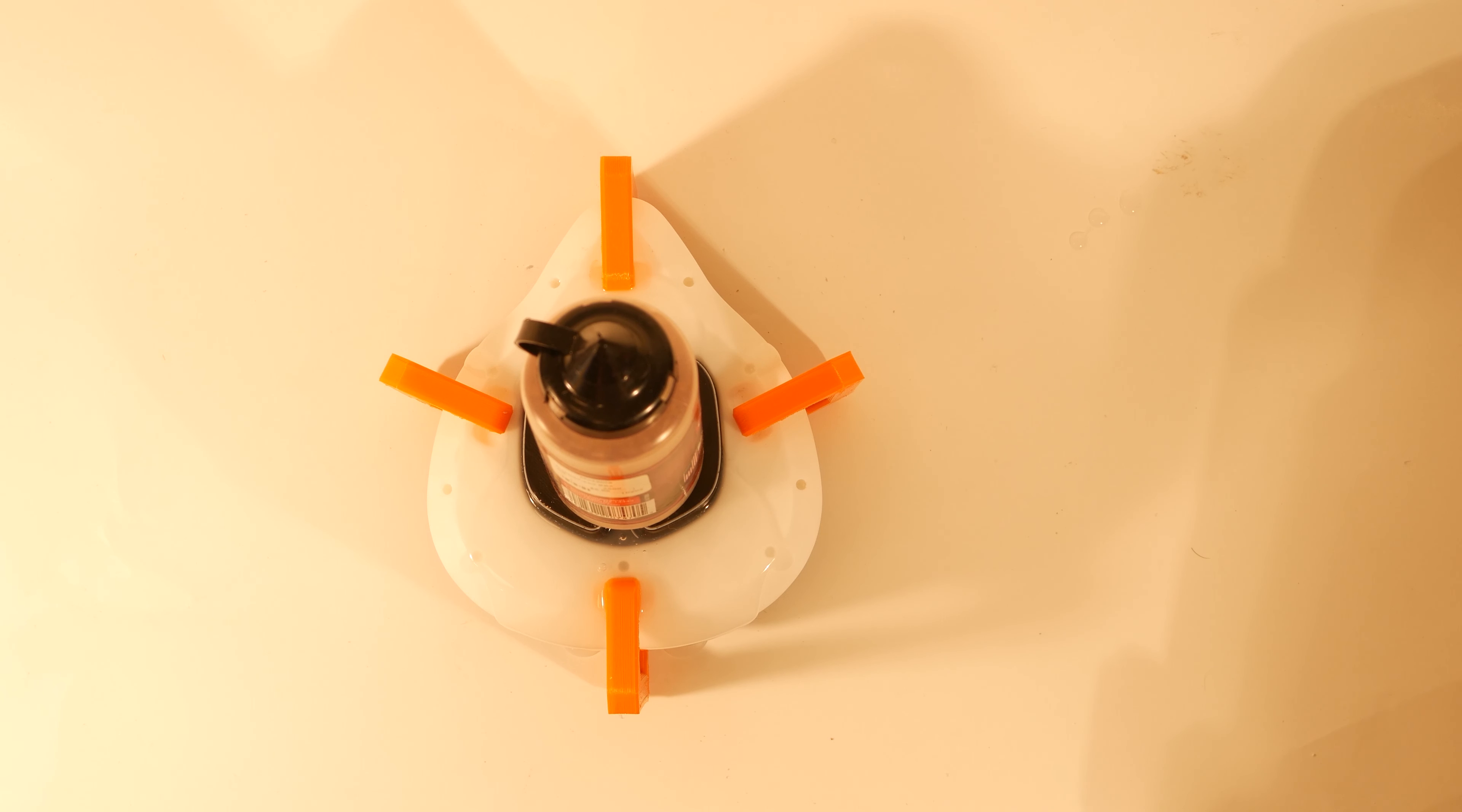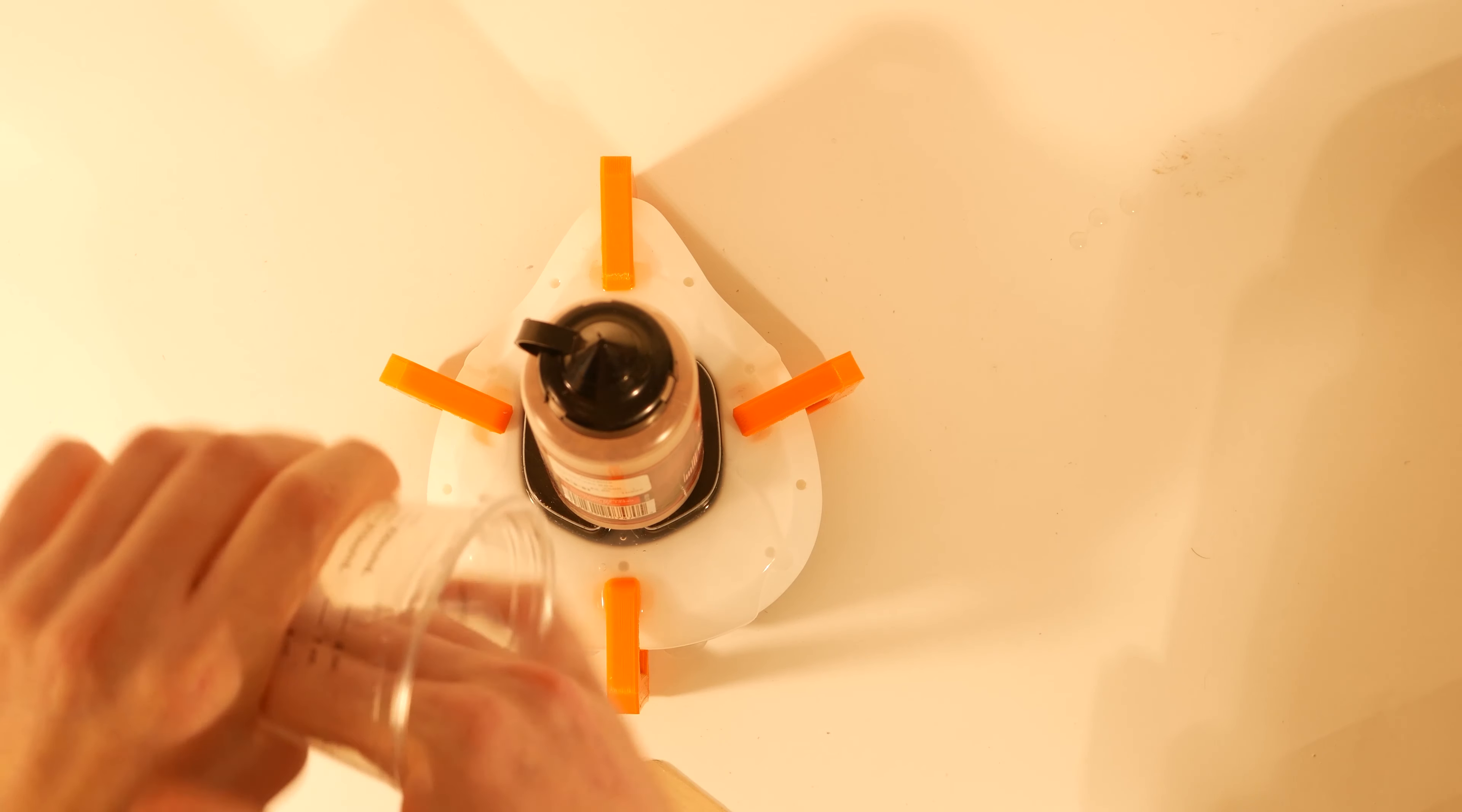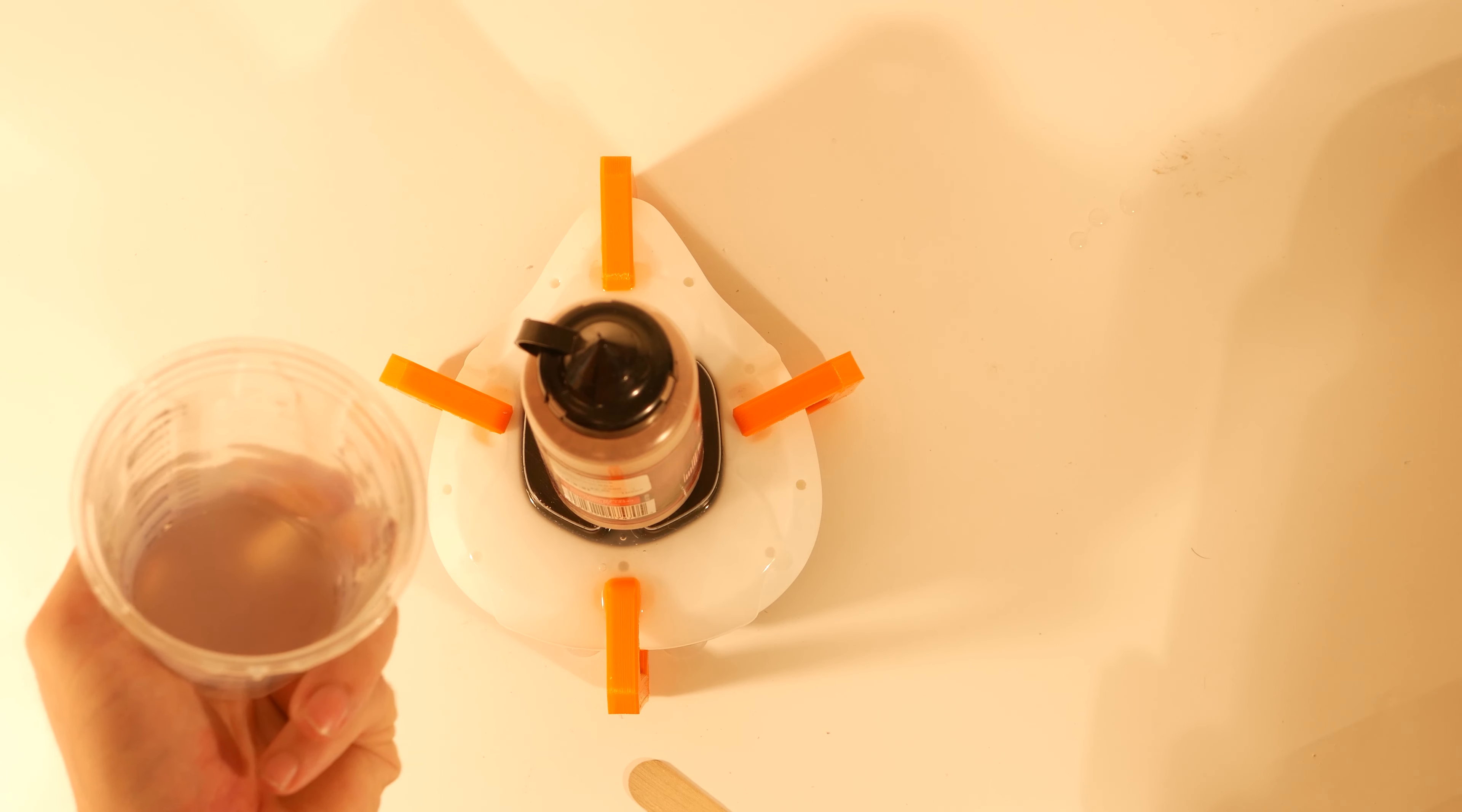So I've let it sit for a little bit and we can test the silicone by using that strip cup we had. It's solid. Nothing's sticking to it. You can put your hand inside. Nothing's sticky. Nothing feels like it's not cured. It's solid silicone. So now you know you're good to remove the part from the mold.